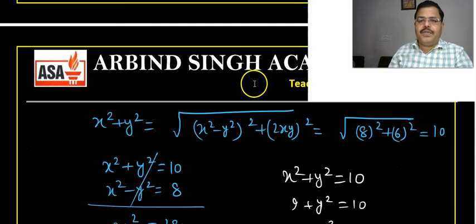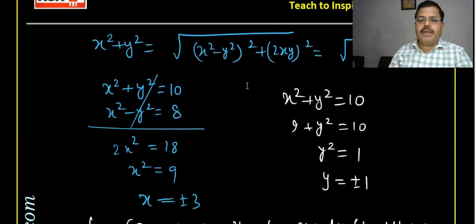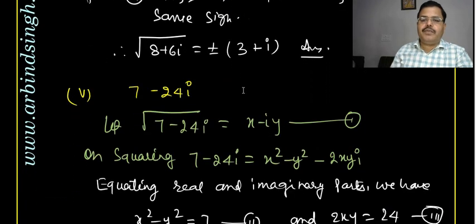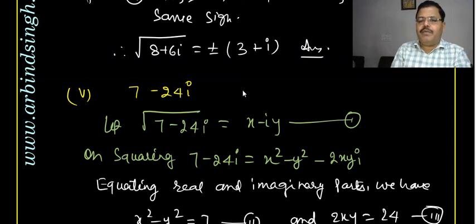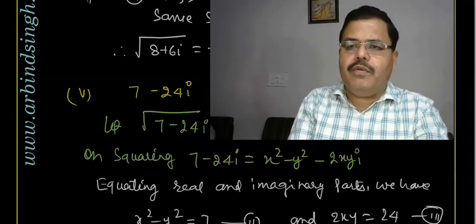I hope you now know how to deal with the square root of a complex number. The key tip: for a negative imaginary part, assume x−iy; for a positive imaginary part, assume x+iy — this keeps the mechanism consistent. In the next class we will discuss more about complex numbers. Till then, God bless you and keep watching.